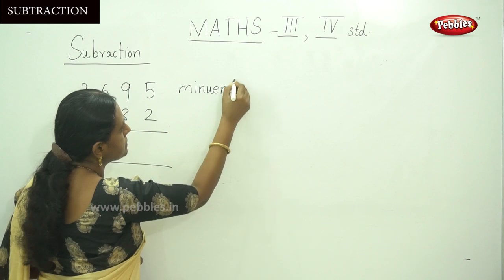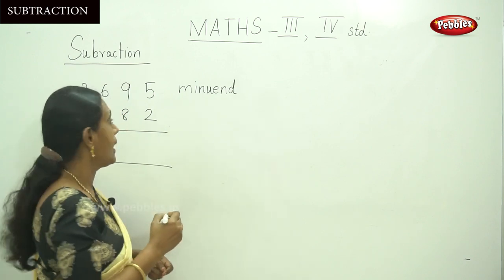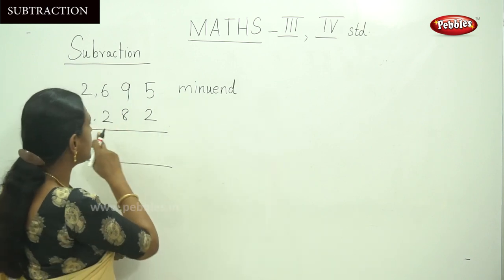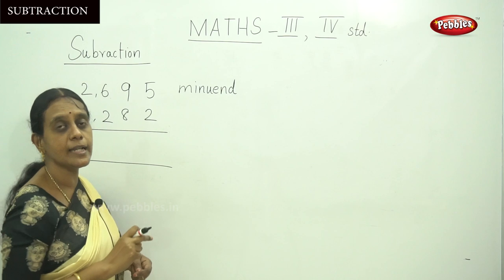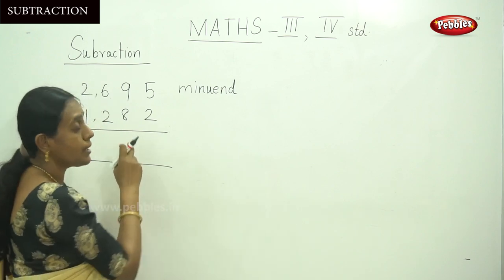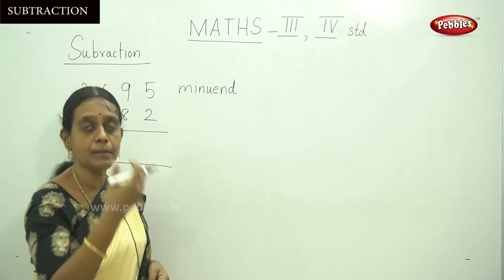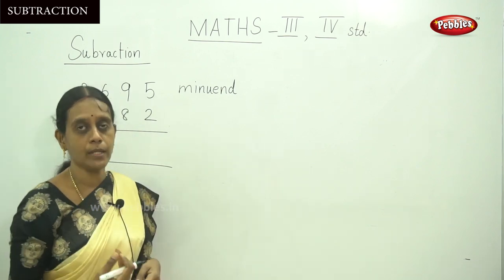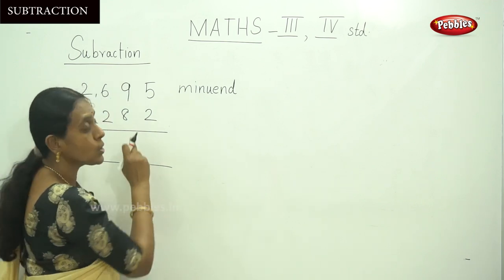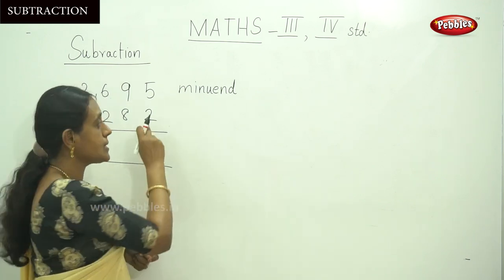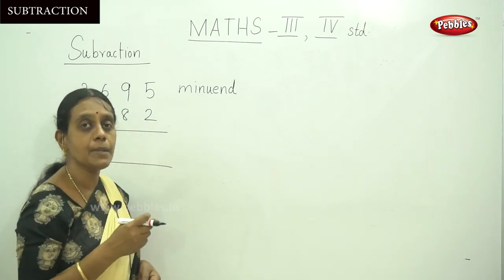We know the term minuend. Now 1282, which is the number to be subtracted from the minuend, is called the subtrahend.